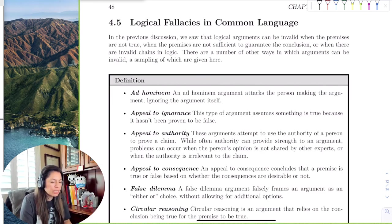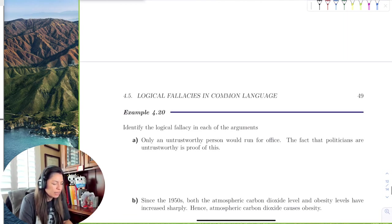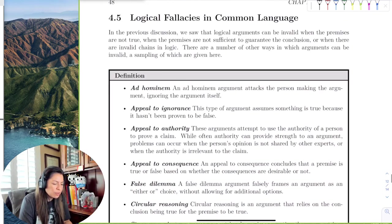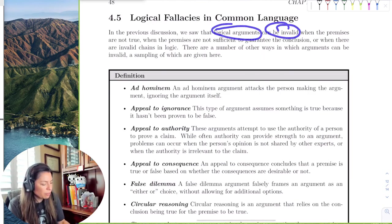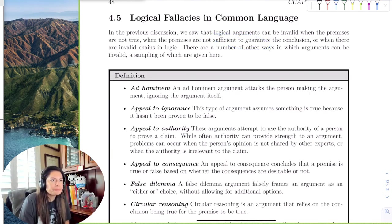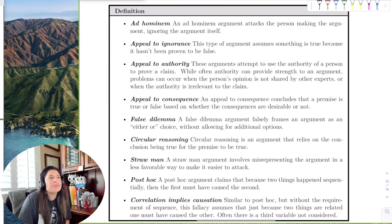And we're just going to go through them quickly because this is more vocabulary. And then we have some examples. So a logical fallacy is just essentially when logical arguments can be invalid when the premises aren't true. And there's just not sufficient evidence either, right? So here are some common ones that are always used.